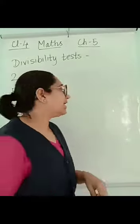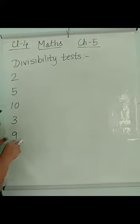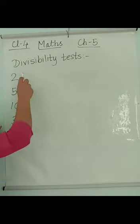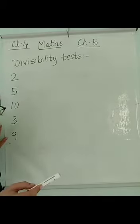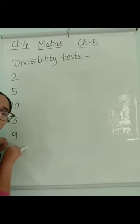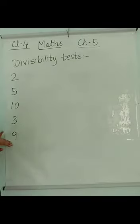For some numbers, you can check orally and the numbers are 2, 5, 10, 3 and 9. So when I give you a 5 digit number, 6 digit number and tell you to check whether it is completely divisible, whether remainder 0 comes or not, then instead of dividing, you will just use divisibility test and you get the answer. So let's see what are the tests.